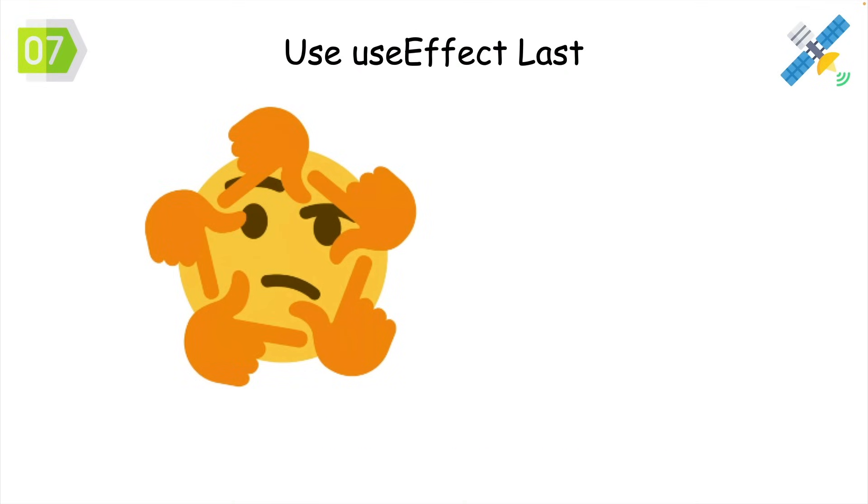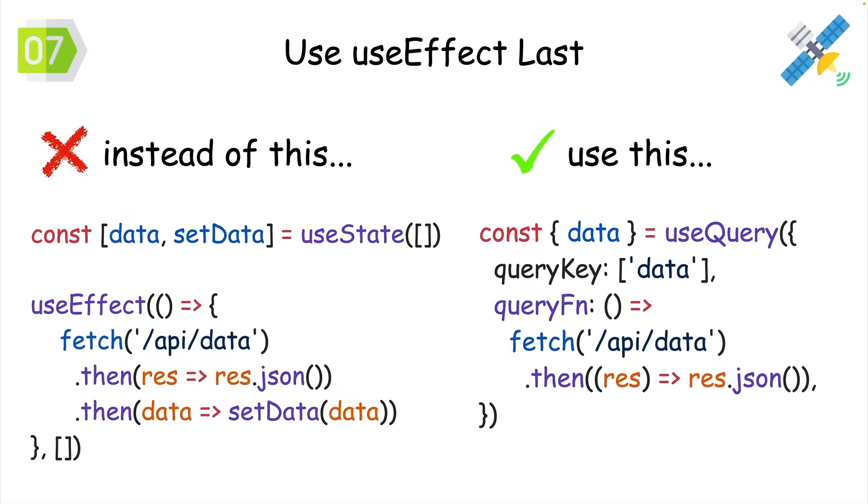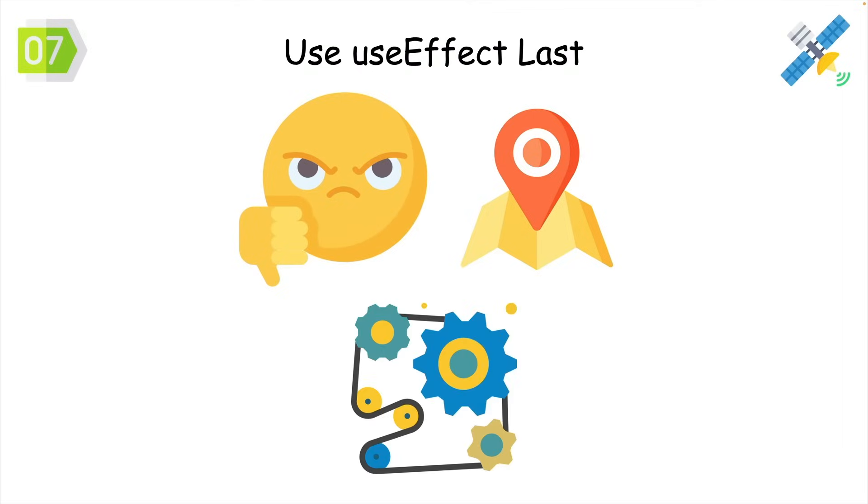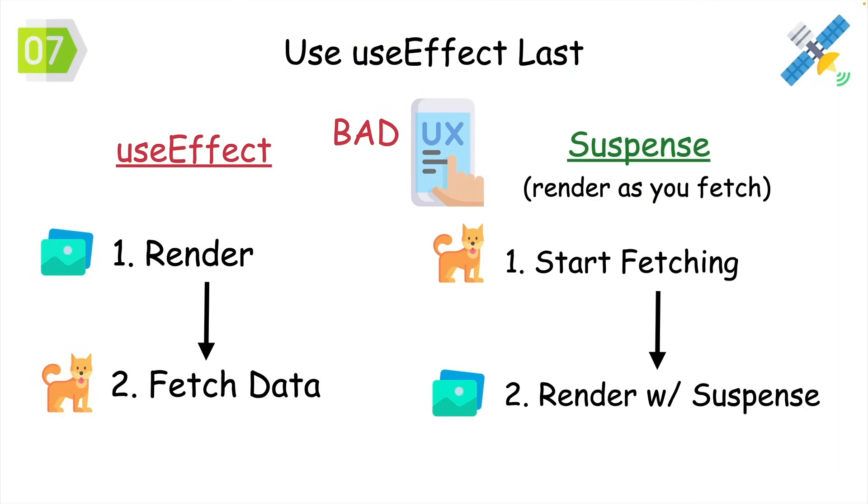But I need useEffect to fetch data, right? If you're still fetching data in useEffect, do yourself a favor and replace it with TanStack Query or SWR. UseEffect is probably the worst place to fetch data because of how the hook works. Fetching in useEffect means you're always requesting data after the component is rendered, which leads to a far worse user experience as compared to tools that allow you to render as you fetch.